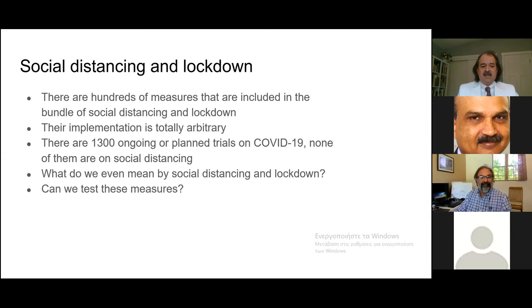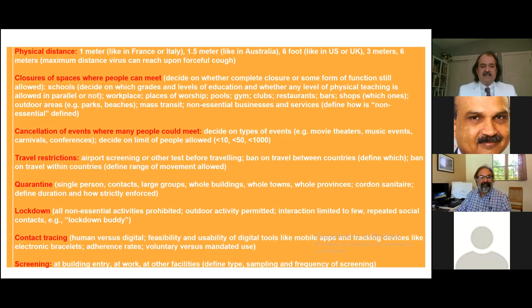These measures include physical distancing, closure of spaces, cancellation of events, travel restrictions, quarantine, and contact tracing and screening — each implementable in many different ways. Even physical distancing varies: a one-meter rule in some places, 1.5 meters in Australia, six feet in the UK, and some argue that forceful coughing can reach six meters. How many people can gather? Sweden was very different from others — rules range from 10 people to 50 to a thousand and up.